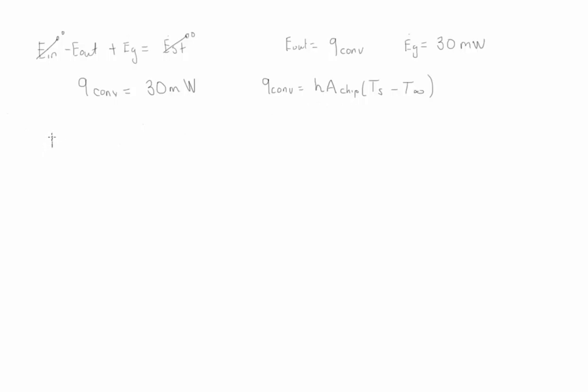We know that the area of the chip is simply 4 millimeters squared, and we can obtain the convection coefficient from the Nusselt number.